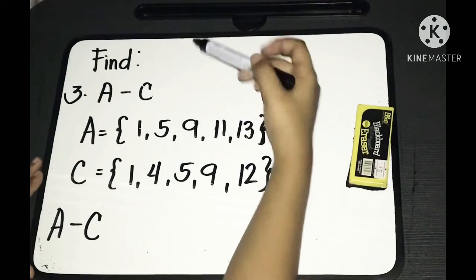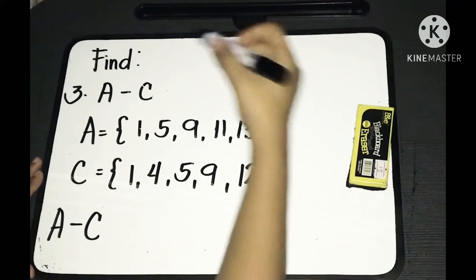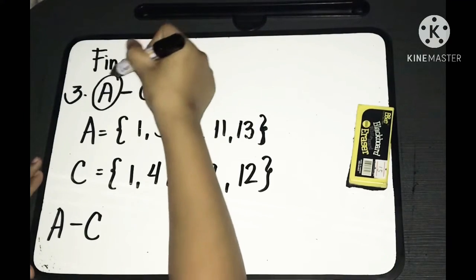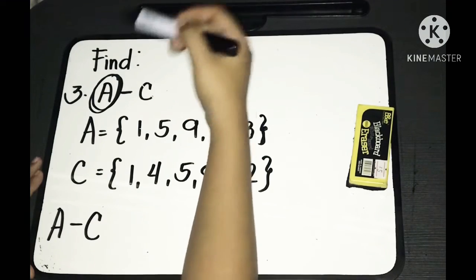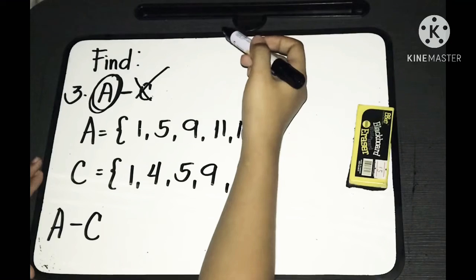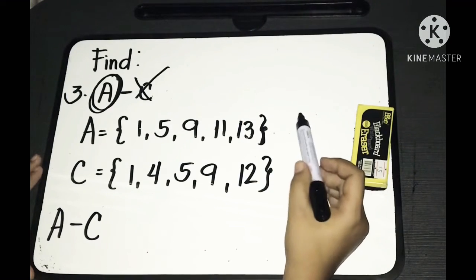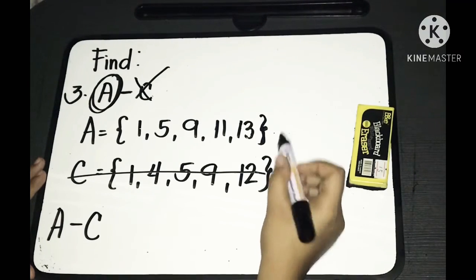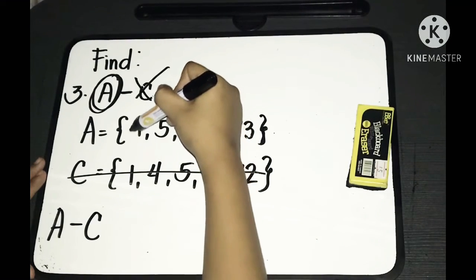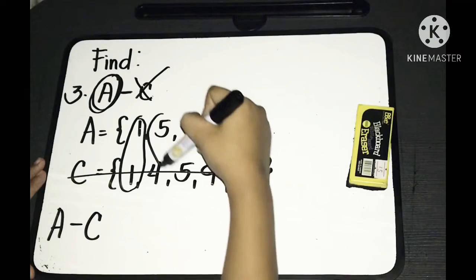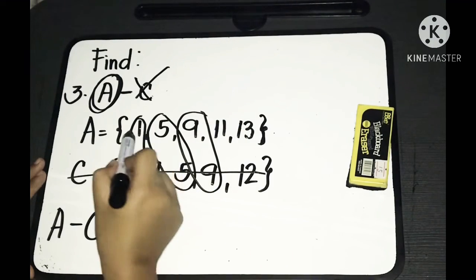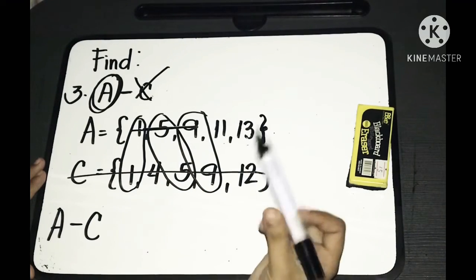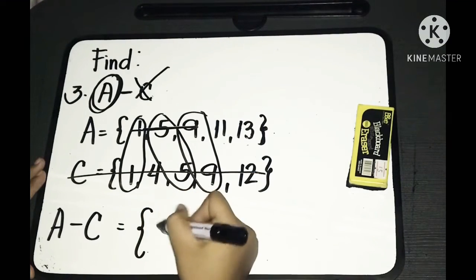For the third example, we have A minus C. The operation is difference. For difference, we depend on the first set only. We are to take the elements we have in A, but not the elements we have in C. We cancel all the elements we have in C, as well as their common elements, which are 1, 5, and 9. The remaining elements are 11 and 13. That is the answer for A minus C.